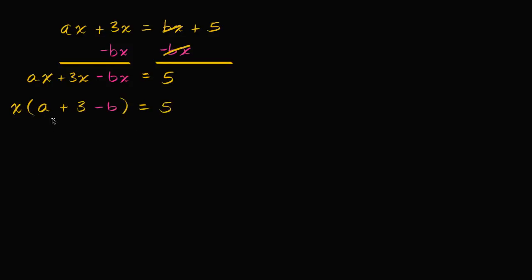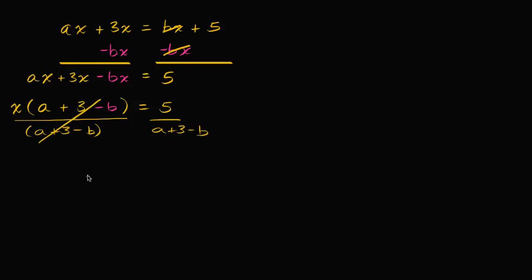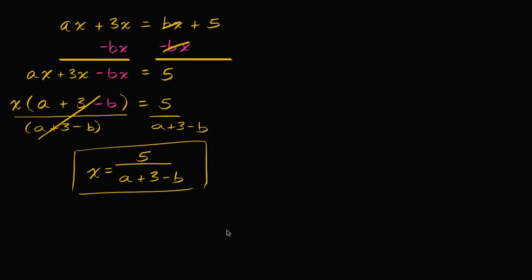Now to solve for x, I can just divide both sides by the thing that x is being multiplied by, which is a plus 3 minus b. So I divide both sides by a plus 3 minus b, and we are done. Let's do one more of these.